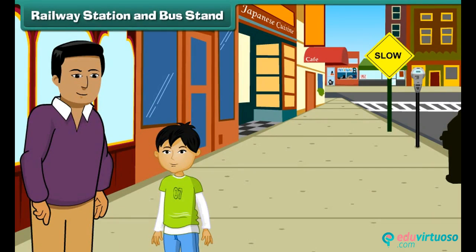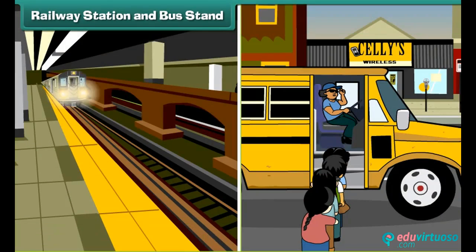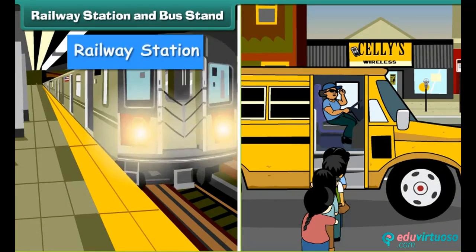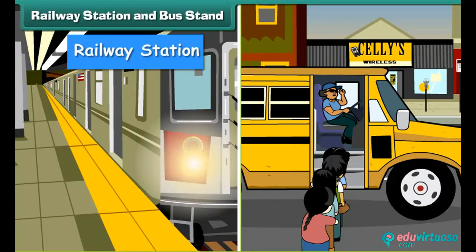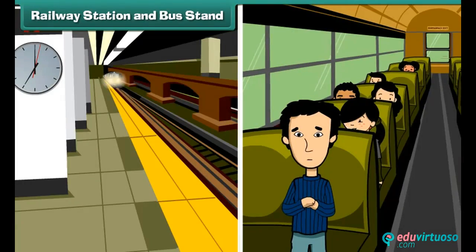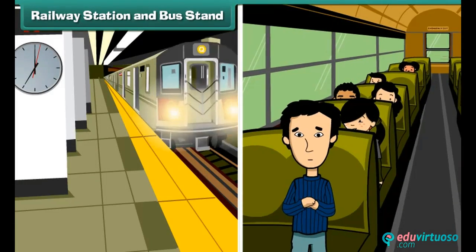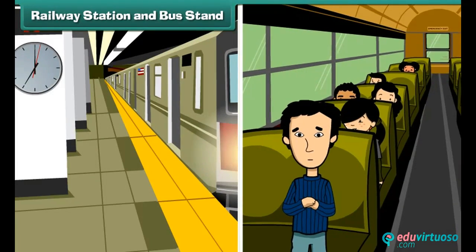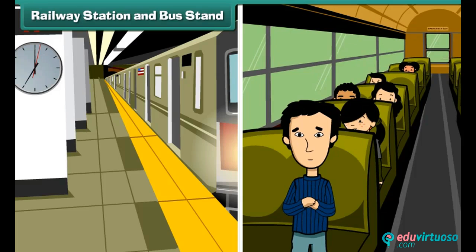Okay dear. Let's go to the railway station. This is the railway station, and in front of it, that is the bus stand. People travel by trains or buses. Trains and buses join our city to various places.